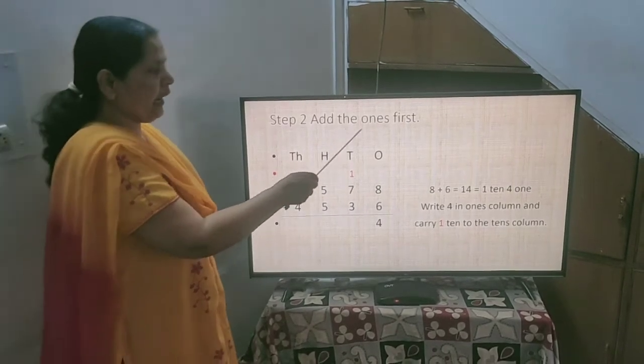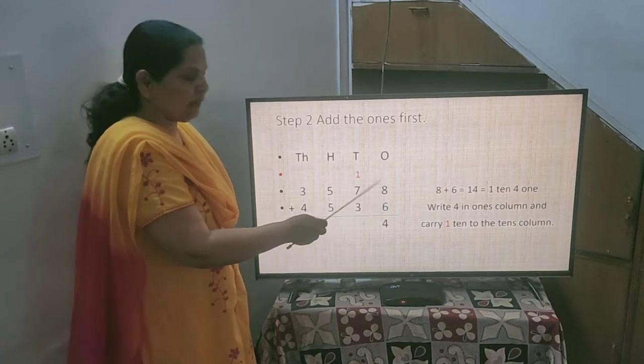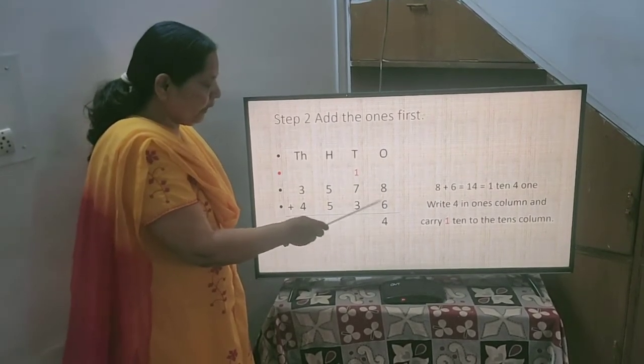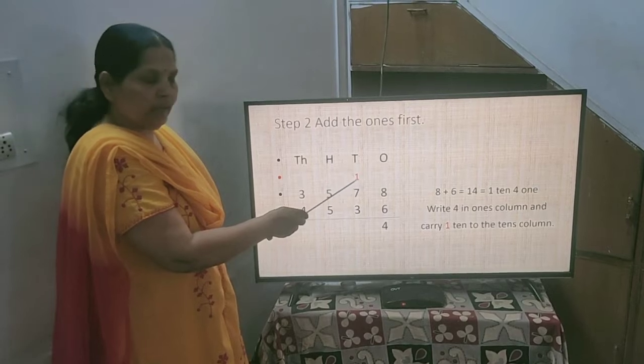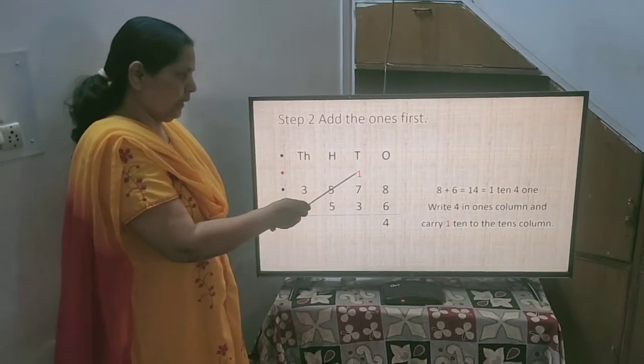Then the second step is add 1s first. Here in 1s place you have 8 and 6, total comes to 14. 4 you will write here and 1 will be carried out in the 10s place. This is second step.